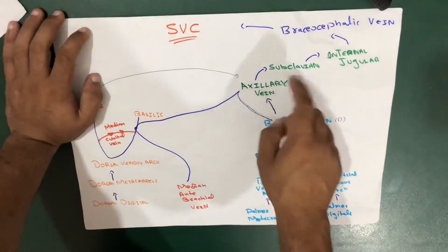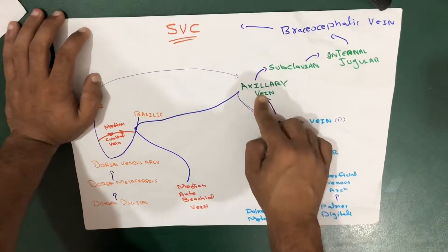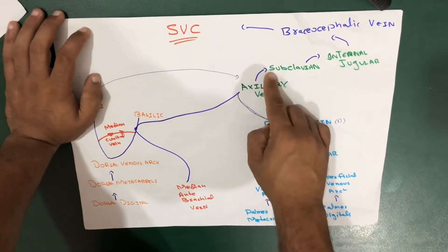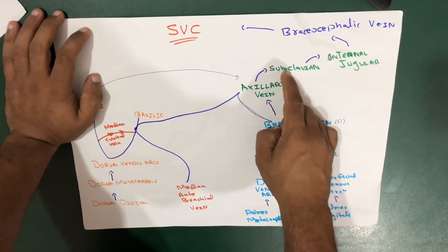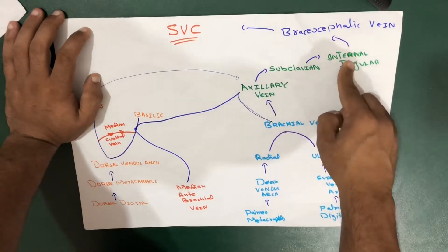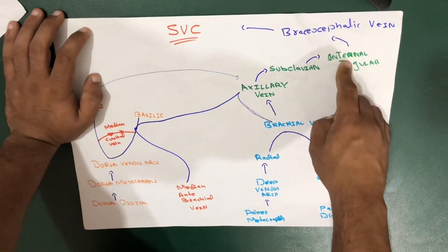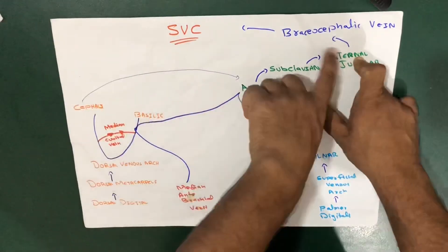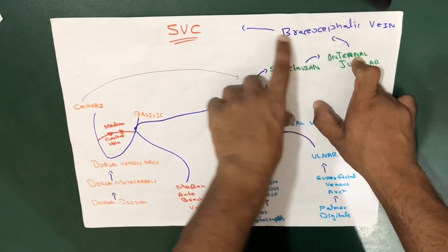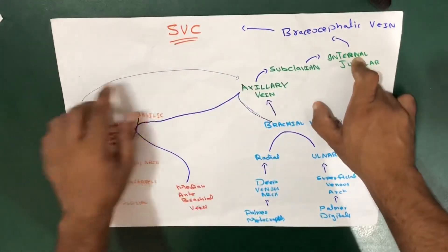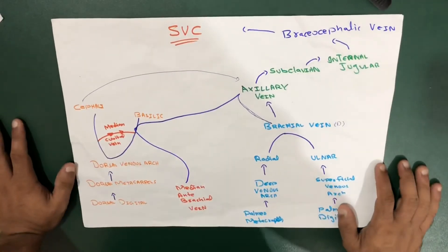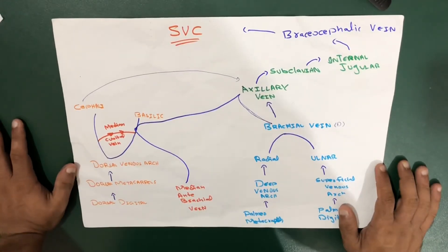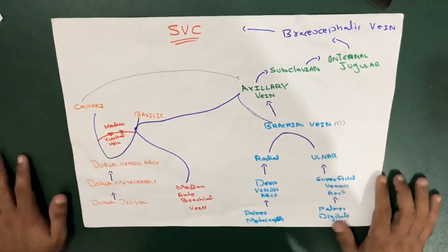The ulnar and radial veins come together to form the brachial vein. The brachial vein and basilic vein combine to give rise to the axillary vein. The axillary vein changes its name after crossing the first rib to become the subclavian vein. The subclavian drains into the brachiocephalic vein, and from there into the superior vena cava.